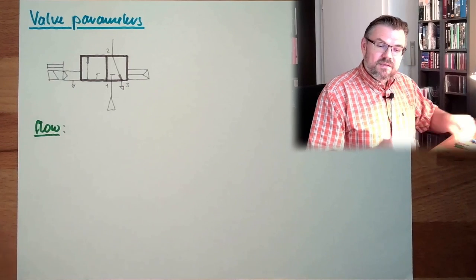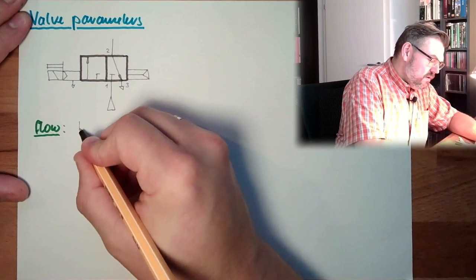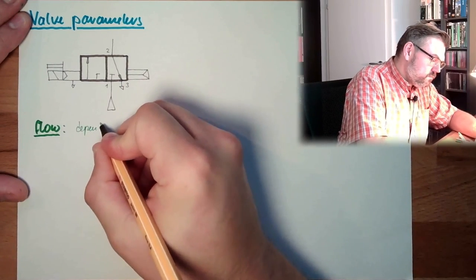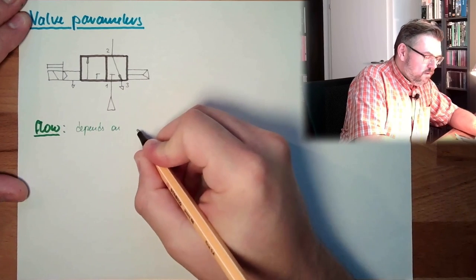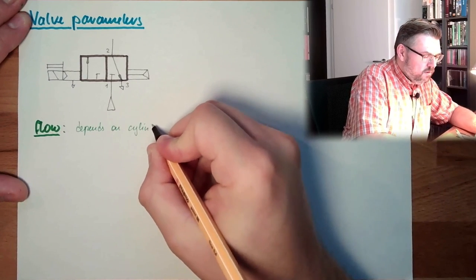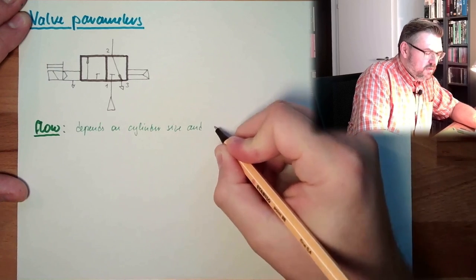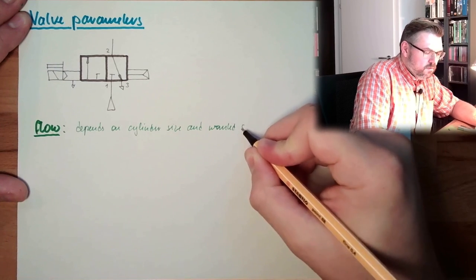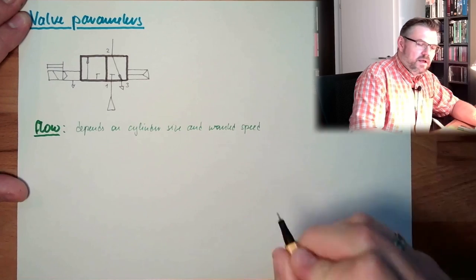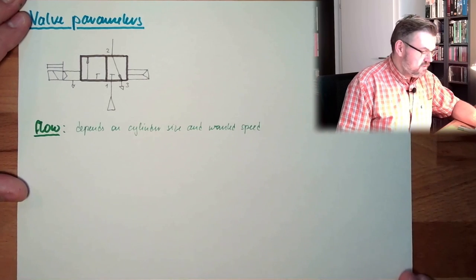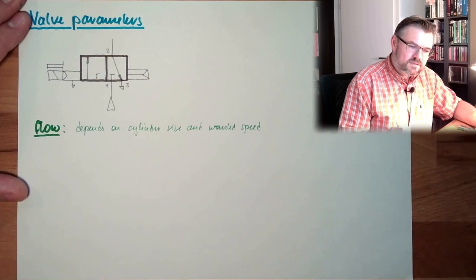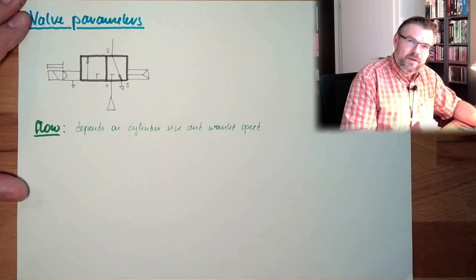So this depends on the cylinder size and wanted speed. These are the dimensions, they're obvious. So what parameters are influencing the flow?